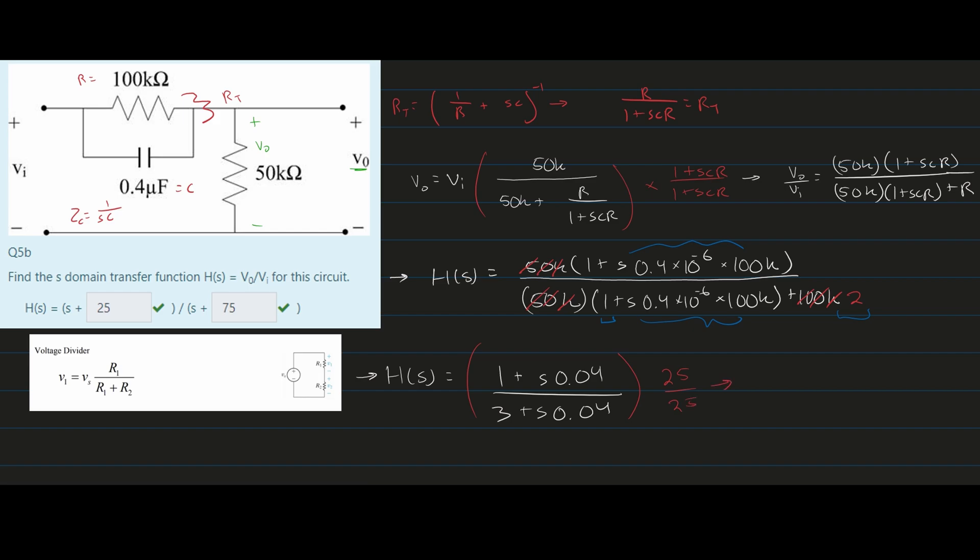If we do this, we get H of S equals 25 plus S, divided by 75 plus S. That is how we get the S domain transfer function for this problem.